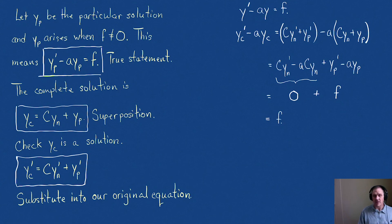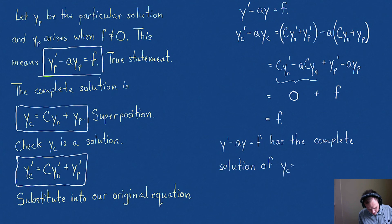And that is the complete solution to a first order linear differential equation. We write that y' - ay = f has the complete solution y_c = Cy_n + y_p. And that is the null and particular solutions to a differential equation. Hope that helps. Thanks for watching.